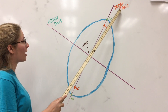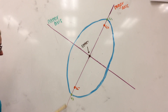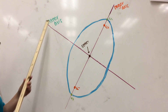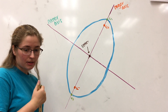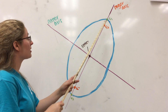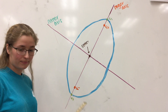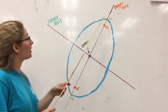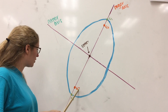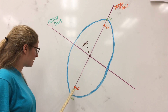Now, let's look at the different parts of an ellipse. This is the major axis right along this line here, and this is the minor axis. The line containing the foci is called the major axis. This is foci 2 and this is foci 1.